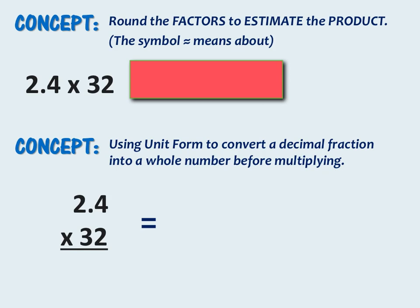When multiplying decimals by multi-digit whole numbers, it is very beneficial to do the following steps before you multiply. The first is to round the factors to estimate the product. In our problem, we have 2 and 4 tenths times 32.